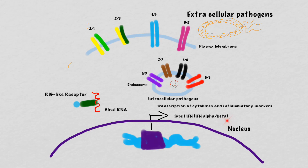These interferons do what their name implies — they literally interfere with the replication of viruses when they are produced. Importantly, all Toll-like receptors and RIG-like receptors lead to downstream signaling that impacts the transcription of cytokines and inflammatory markers within the nucleus, which can have long-term effects on how we fight the virus. In summary, while the innate immune response is not specific, it has developed a way to recognize crucial components that are shared across many pathogens.